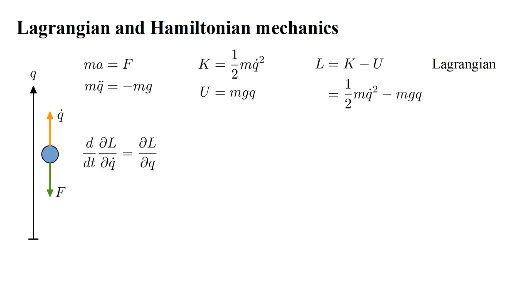The equation of motion is then given by the Euler-Lagrange equation: the time derivative of the derivative of L with respect to velocity equals the derivative of L with respect to position. L depends on Q through the term minus M G Q, so the derivative of L with respect to Q is minus M G, the right side of Newton's equation. L depends on Q dot through the term one-half M Q dot squared, so the derivative of L with respect to Q dot is M Q dot, and the time derivative of that is M Q double dot, the left side of Newton's law.